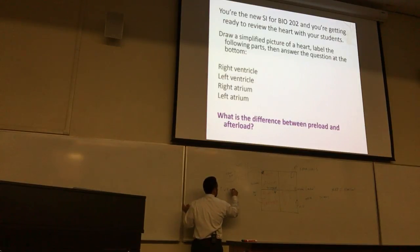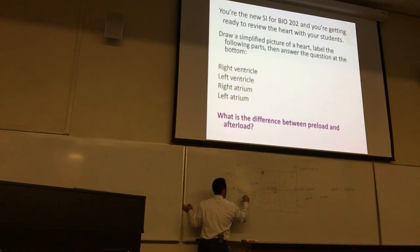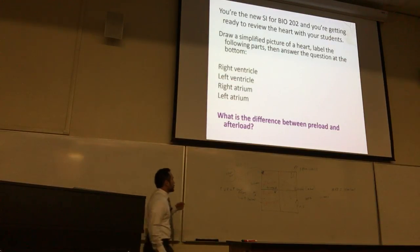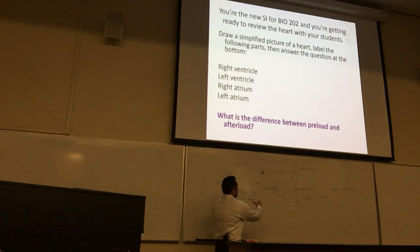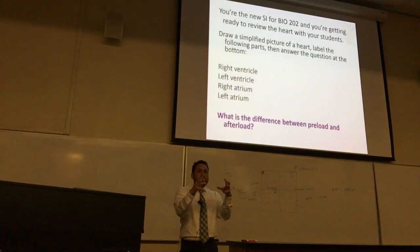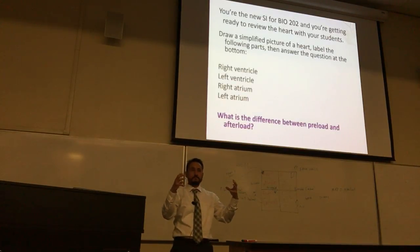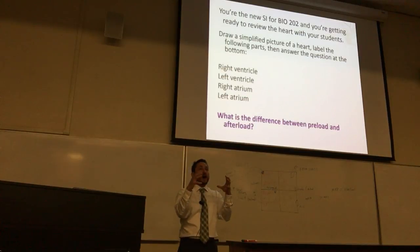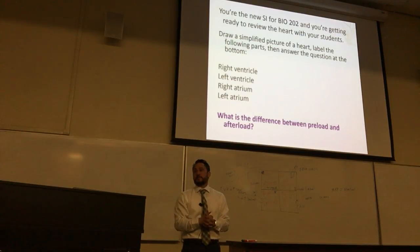As venous return increases, this increases ventricular filling, and this in turn increases preload. During diastole, before it contracts, there is a volume of fluid that comes into the right side of the heart — the filling side, the low-pressure side — and as it fills it stretches out the cardiac muscle. As it stretches, the actin and myosin cross-bridges reach an optimization where the maximum number of cross-bridges form.